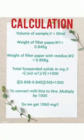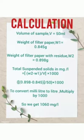The total suspended solids in mg per liter is calculated using the equation: (W2 - W1) divided by V, multiplied by 1000, where W1 is the weight of the filter paper, W2 is the weight of the filter paper with residue, and V is the volume of the sample.